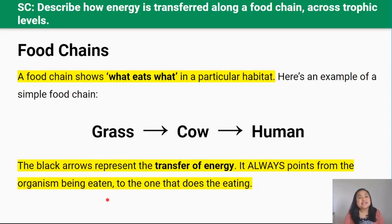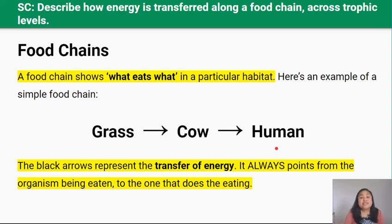A food chain is a linear diagram that shows what eats what in a particular habitat. Here's an example of a simple food chain: grass is eaten by cow, and cow is eaten by human in some cultures. The black arrows in the food chain diagram represent the transfer of energy from one organism to another. The arrows always point from the organism being eaten to the organism doing the eating, because that's the direction of energy transfer.